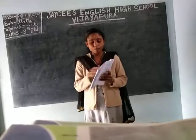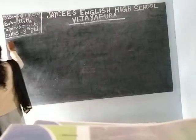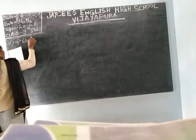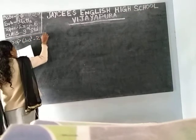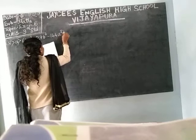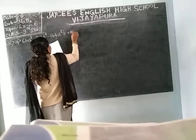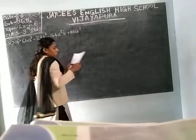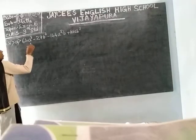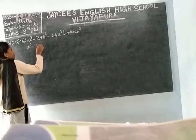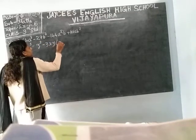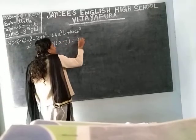Take page number 80, 8th May, 4th problem: 64A cube minus 27B cube minus 144A square B plus 108AB square. See here, the formula is: X cube minus Y cube minus 3XY into X minus Y is equal to X minus Y whole cube.